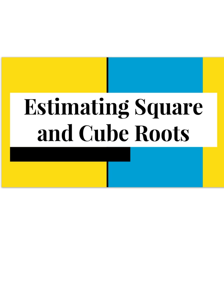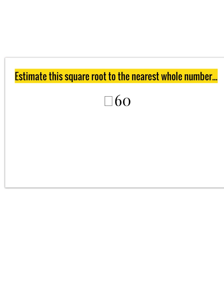In today's lesson we will review how to estimate square and cube roots. Let's go ahead and estimate the square root of 60 to the nearest whole number. The square root of 60 isn't exactly a whole number because 60 is not a perfect square, but it is sandwiched between two perfect squares. I want to focus on which one it is closer to so I can get the nearest whole number.